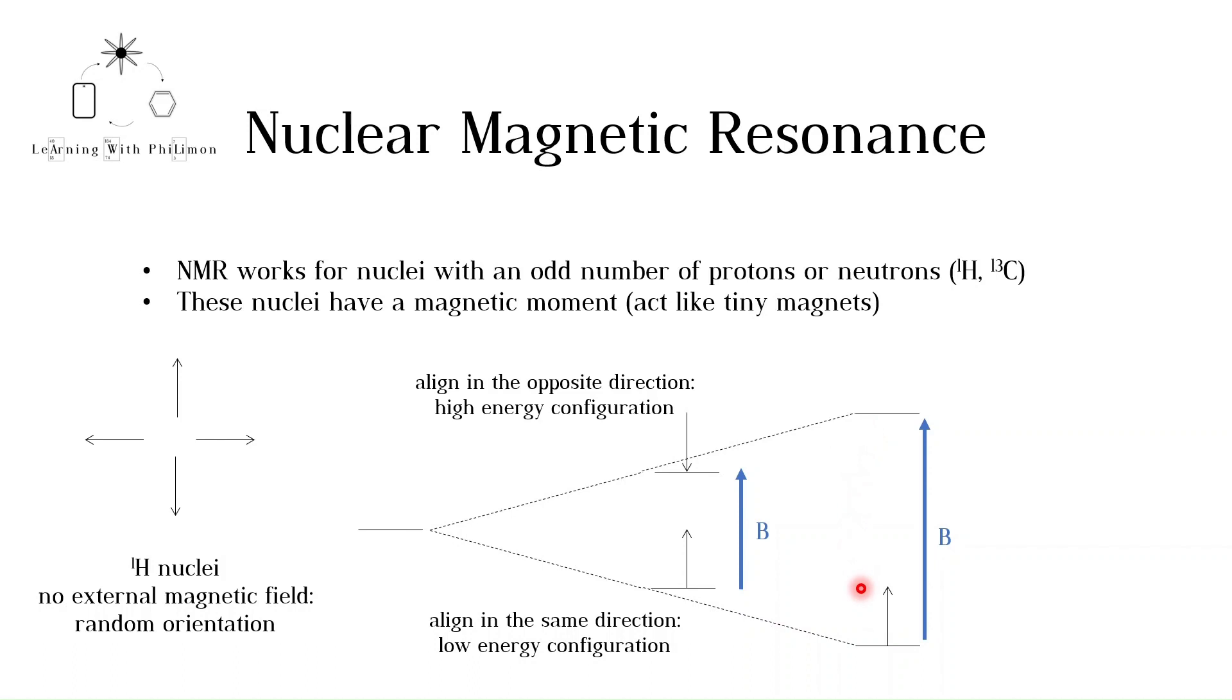It turns out that light in the radio frequency range is the correct amount to cause a transition from the low to high energy state. When a nucleus is in this orientation, it is said to be in resonance. Now we see why the technique is called nuclear magnetic resonance - a magnetic field is applied, and then radio waves are used to make nuclei achieve resonance.